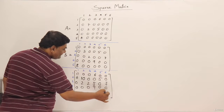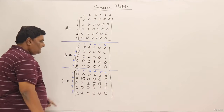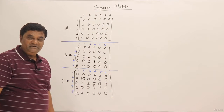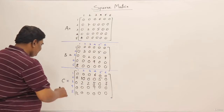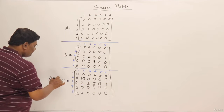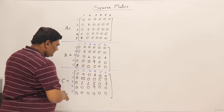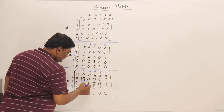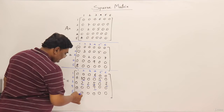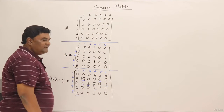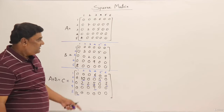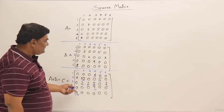This is the result of addition of the two sparse matrices A and B, giving us result C. Counting the nonzero elements in C: 1, 2, 3, 4, 5, 6, 7, 8, 9 — so there are 9 nonzero elements. Now let us do the same thing using coordinate list representation.